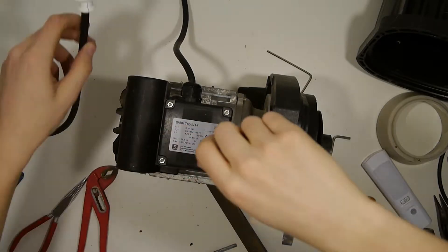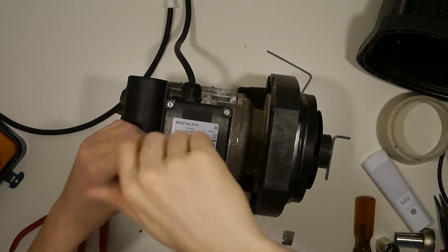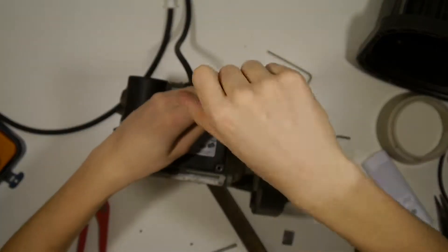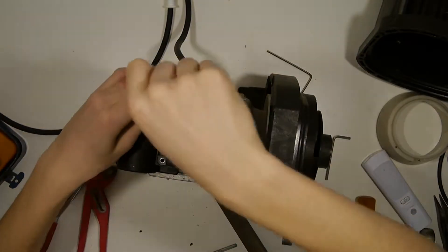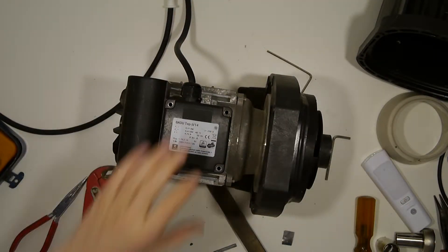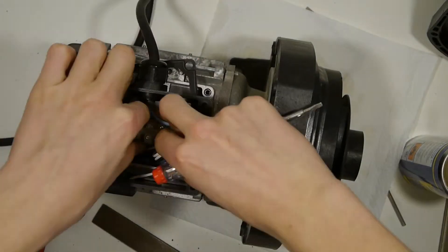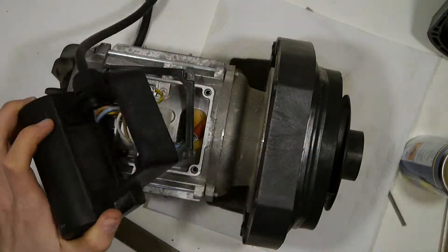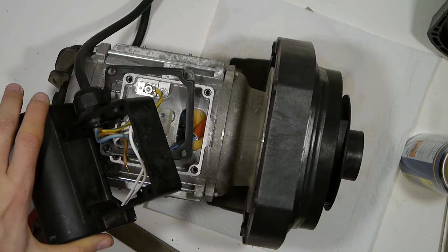Now we can open up the electrical part. This can be done by removing the four screws. Then we can simply pop away the plastic part and remove the electronic cable.